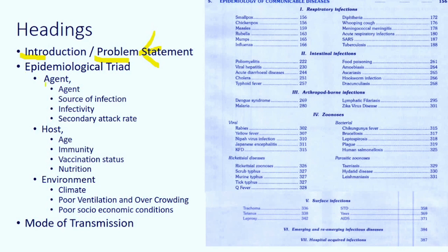Then the Epidemiological Triad, comprised of agent, host, and environment. In agent, we talk about what is the agent, source of infection, infectivity, and secondary attack rate. In clinical features, we talk about case fatality rate. In host, we commonly talk about age factor, immunity, vaccination status, and nutrition. In environment, we talk about climate, poor ventilation, overcrowding, and poor socioeconomic conditions.